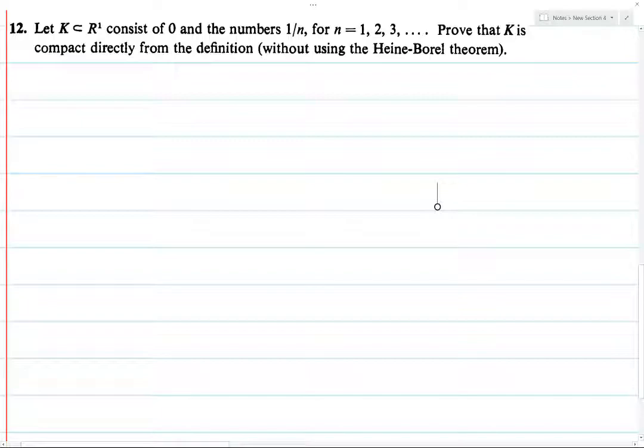So basically, what we're going to do is we're going to take this open cover, and if you have an open cover, then this open cover covers all of the points in K. In particular, it covers the point 0.